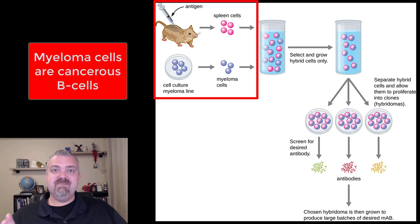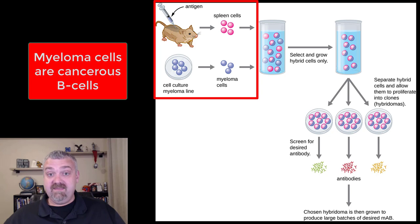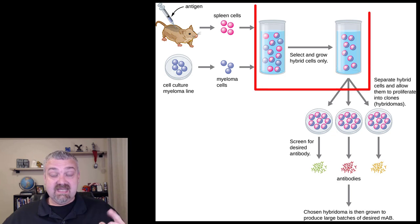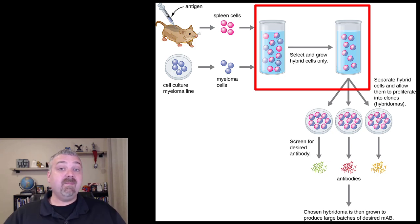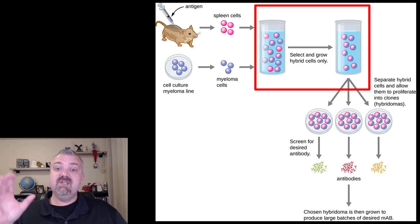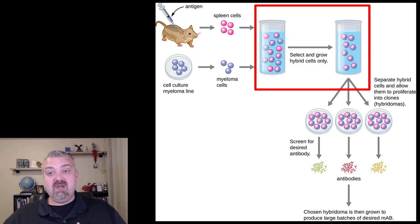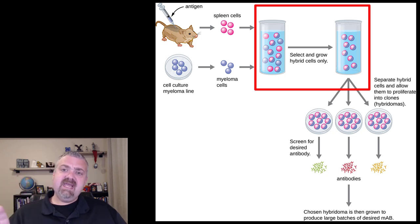Why in the world would you ever want to use cancer cells? Well, we want to make sure that these cells — these hybridomas — are immortal, and the only advantage of a cancer cell is that they've forgotten how to die. So you take the spleen cells that are making antibodies and mix them with myeloma cells that have forgotten how to die, and you put them together, and some of them are going to fuse — forming hybridomas. You put them in a culture to select and grow hybrid cells only. If they're just spleen cells, they're going to die. If they're just myeloma cells, they also won't survive, and we get rid of them. So in this container on the right, all we have left is hybridomas.